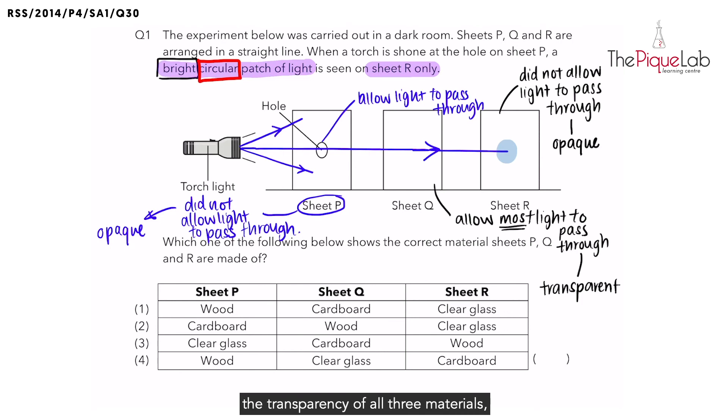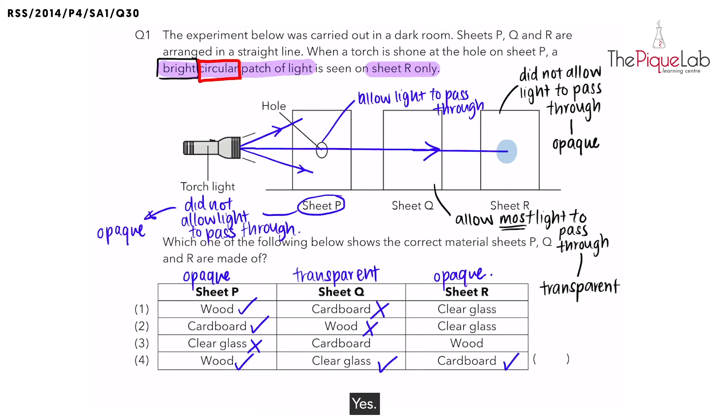Once you have figured the transparency of all three materials, it is much easier to derive your answer. For sheet P, it has to be an opaque object. That leaves us with wood, cardboard, definitely not clear glass that is transparent. We have three possible options. Let's move on to Q. Since there was a bright patch of light, Q allows most light to pass through. It is transparent. So option one is out. Q cannot be cardboard. Q cannot be wood. For option four, clear glass is possible because clear glass is transparent. Finally, we have our last object, sheet R, which is opaque. We are left with option four. Is cardboard opaque? Yes. So what would be the best answer for this question? It will be number four.